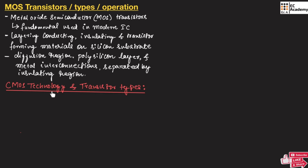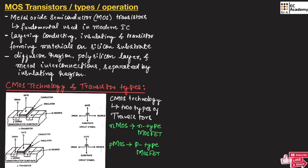Let us understand CMOS technology and transistor types. This is the structure of the NMOS transistor and this is the symbol. From the structure as well as the symbol, we can identify that NMOS or N-type MOSFET consists of three important terminals: drain, source, and gate, which can also be observed in the structure.